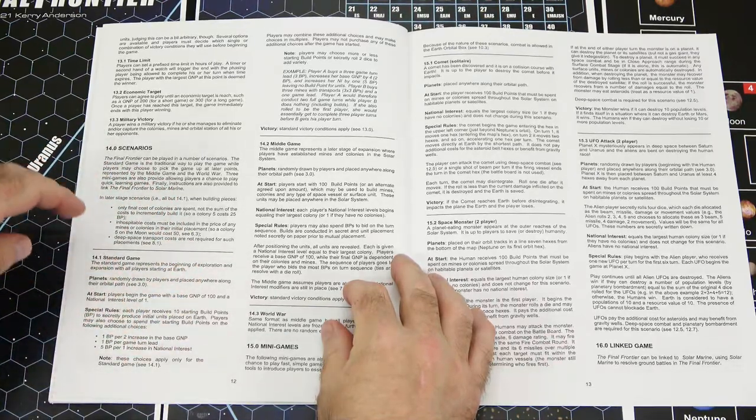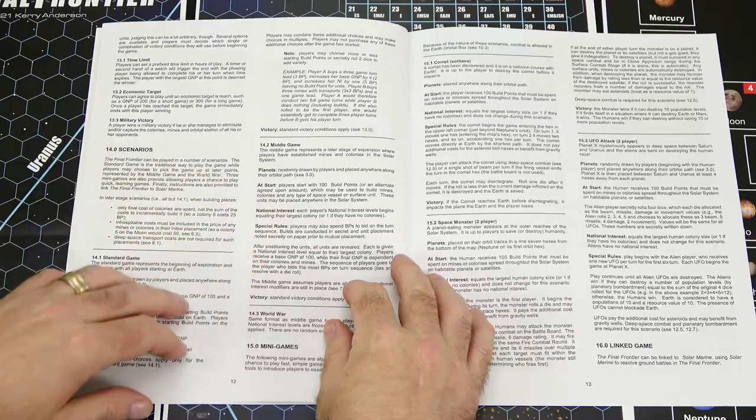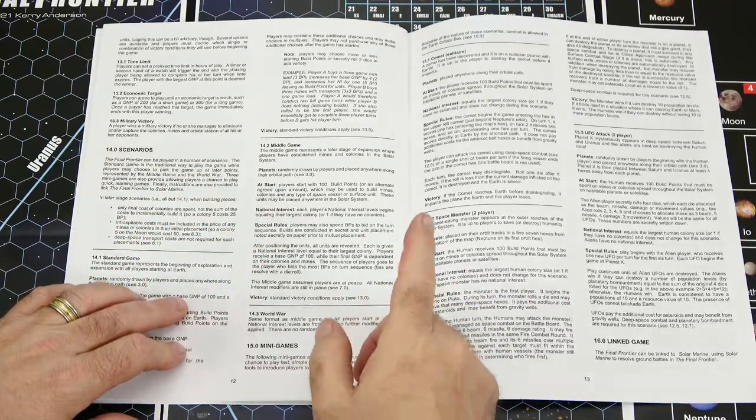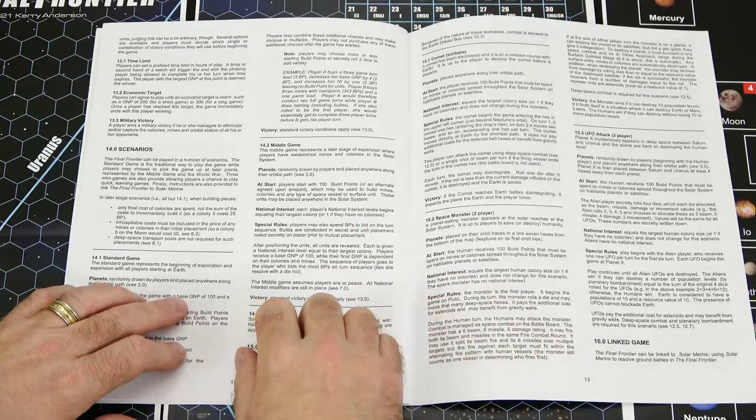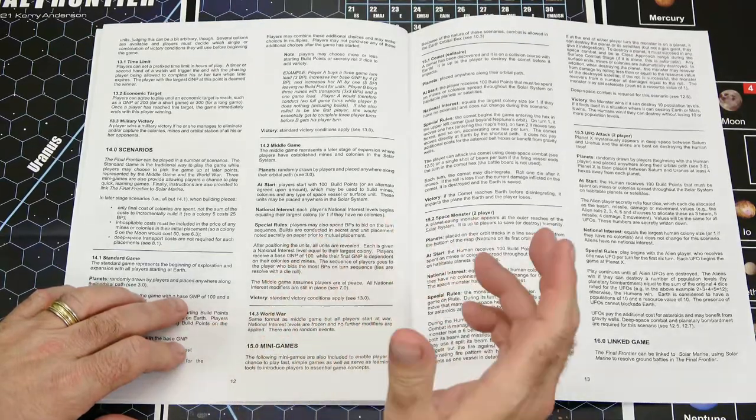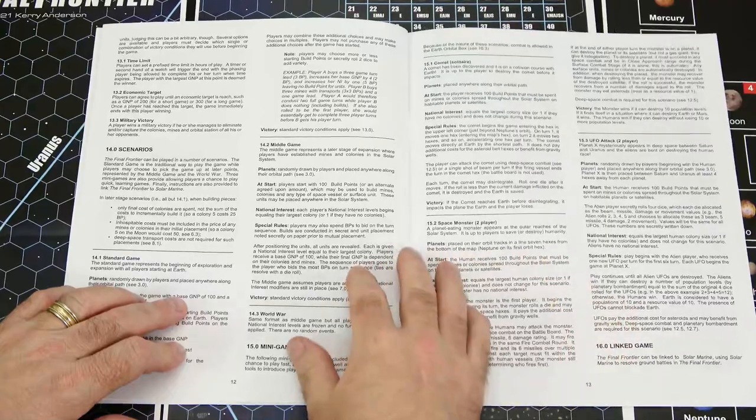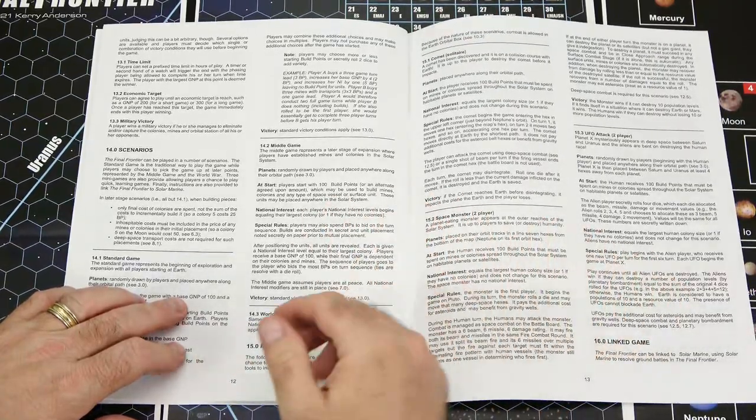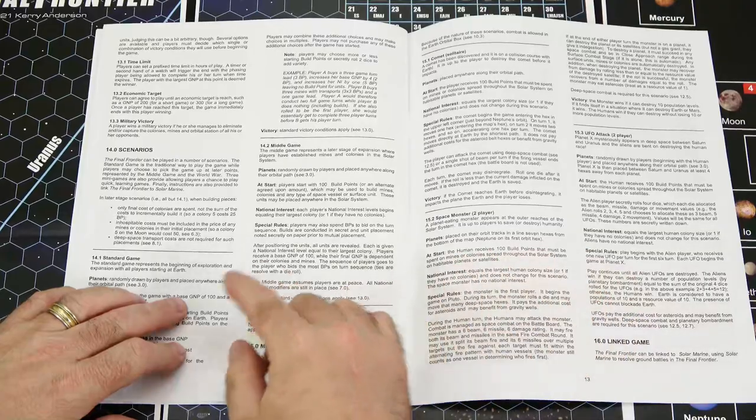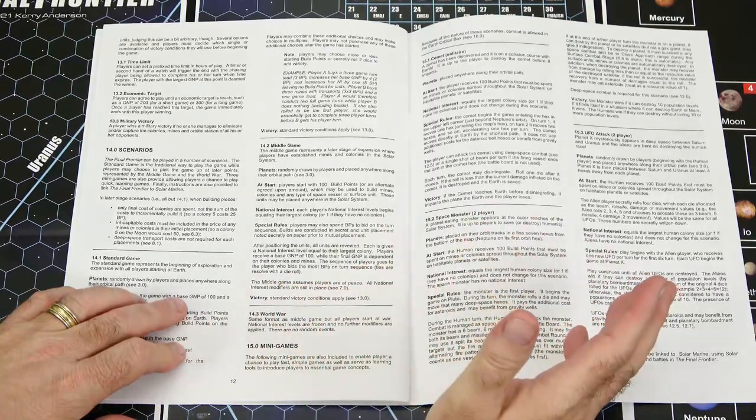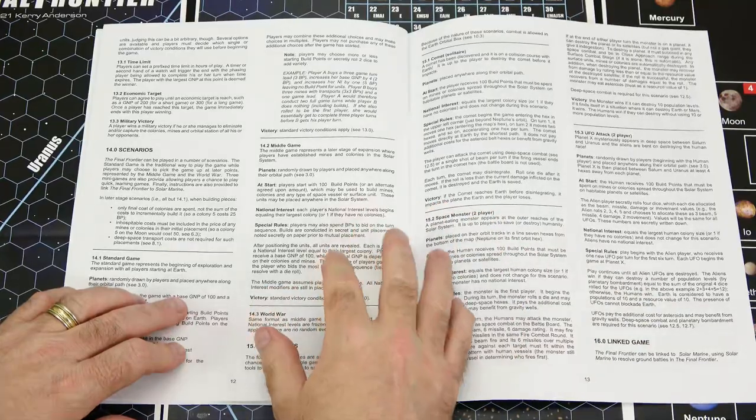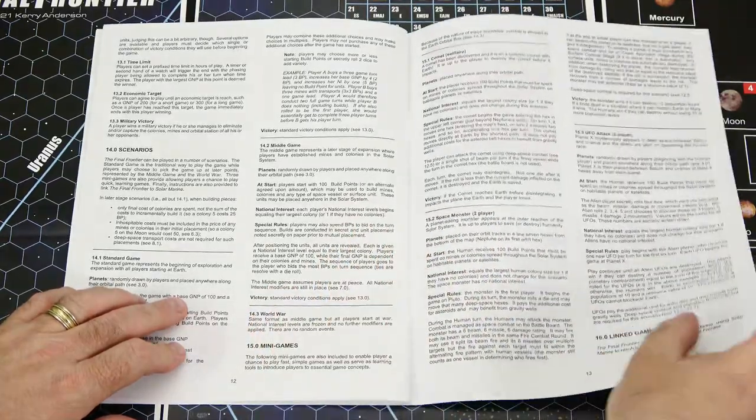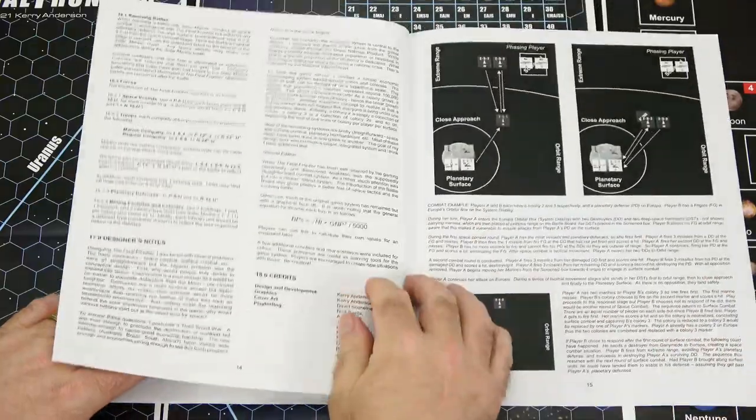Here you've got scenarios and there's the standard game, the middle game, and then a world war. And then there's also mini games, including a solitaire game, Comet. Then you have the space monster for two players. So you've got a couple scenarios. You've got another one, UFO Attack here. So you've got like six different scenarios that come in this game, which is pretty cool, including a directly solitaire game.